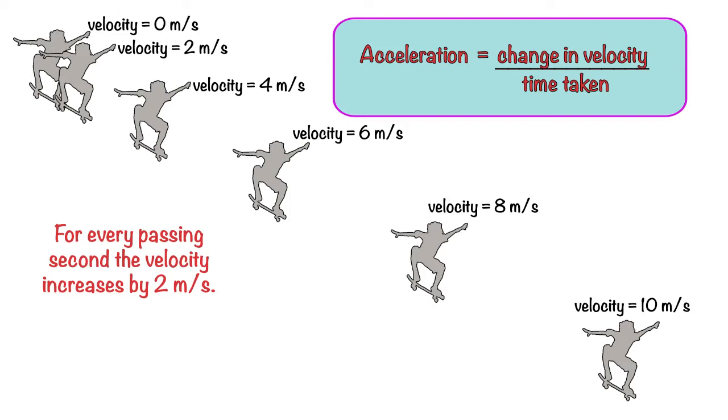Therefore his acceleration is 2 meters per second divided by 1 second, or 2 meters per second per second, or 2 meters per second squared. The units for acceleration must be distance divided by time squared, hence meters per second squared.